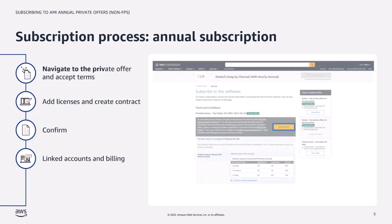First, the customer will sign into the AWS account they want to use to subscribe to the private offer. Then they'll navigate to the private offer and choose Accept Terms. It should be noted that if a customer stops at this point, they will be subscribed to the private offer at the hourly rate, meaning any usage of the product will result in the customer being billed at the hourly rate.